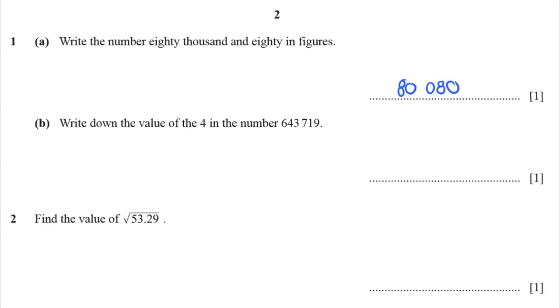Done. Write down the value of the 4 in the number 643,000. Well, it's 40,000, right? So we're going to write 40,000. That's its value.